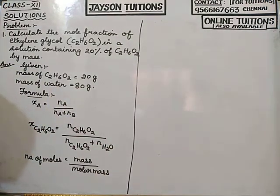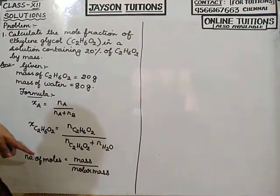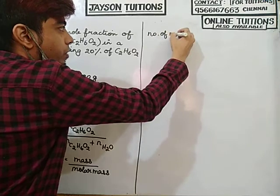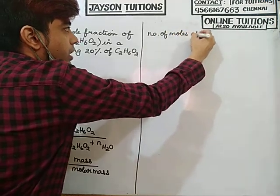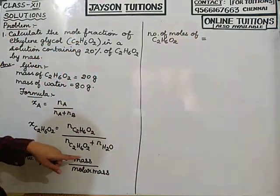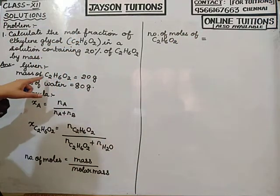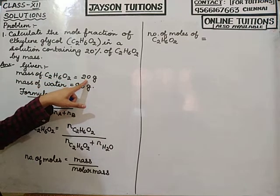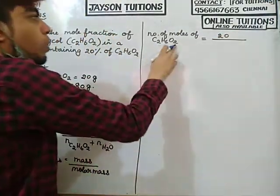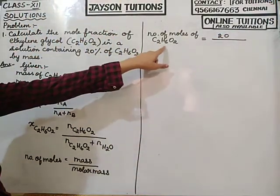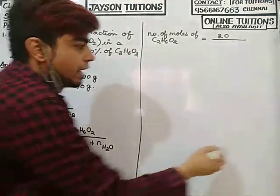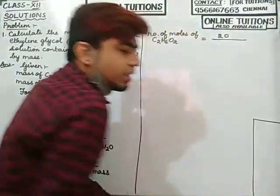First, I will find the number of moles of ethylene glycol C₂H₆O₂, which equals mass divided by molar mass. The mass given is 20 grams, so it is 20 divided by molar mass. To calculate the molar mass, you must memorize the atomic masses: hydrogen is 1, carbon is 12, oxygen is 16, sodium is 23, chlorine is 35.5.